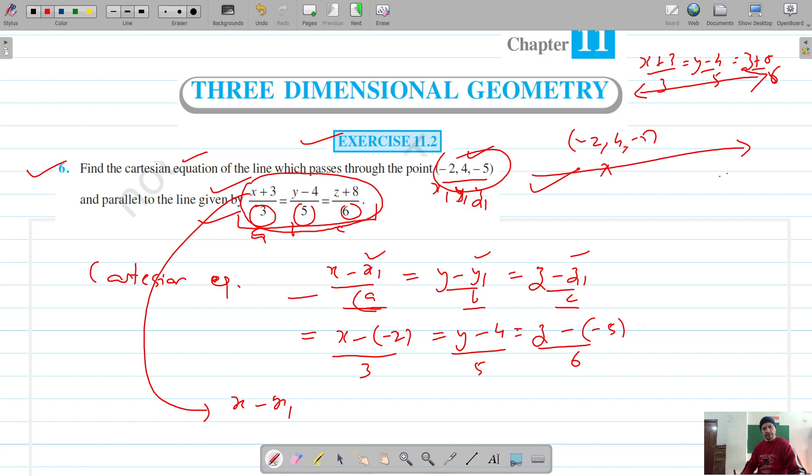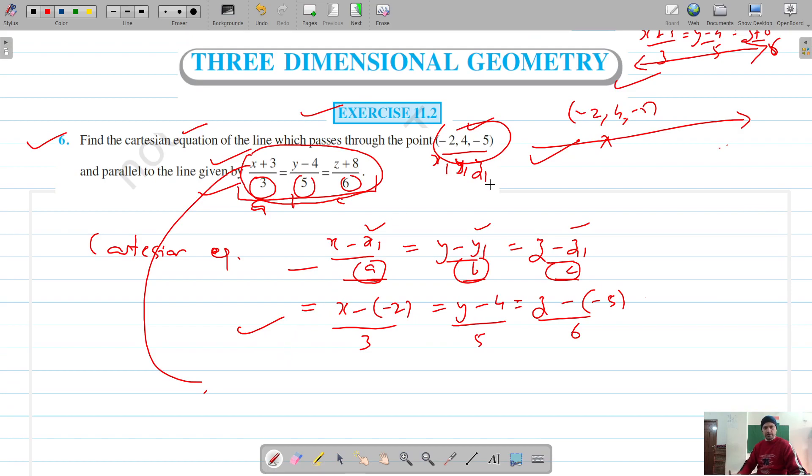If we compare this equation with the Cartesian form x minus x1, the denominators are our directional ratios for the parallel line, and that's what we have to put in the required Cartesian equation.